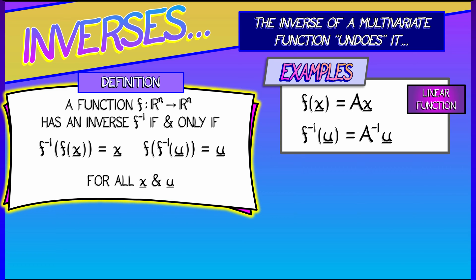You might guess that it's using the inverse matrix, that f inverse of u is a inverse times u. How do you know that that guess is correct? Simply follow the definition. Compose these two together, both ways, that a and a inverse are going to combine to give you the identity.